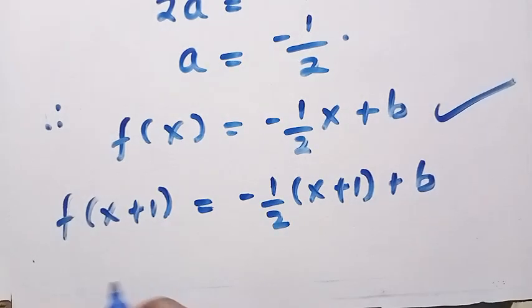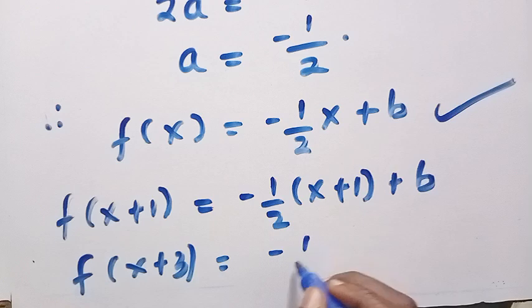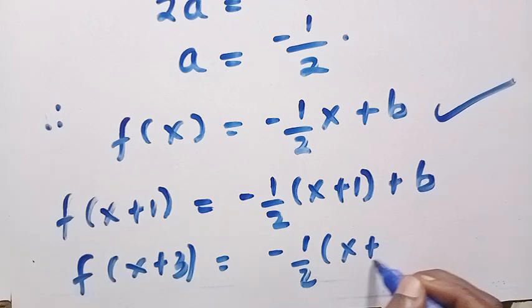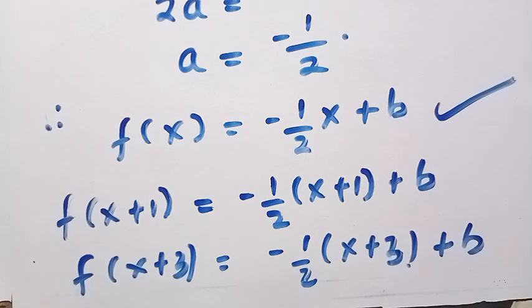And also we have f(x+3), so which also equals minus 1 over 2 into bracket of x+3 plus b. And when we equate this together, they will be canceled and we only have one.